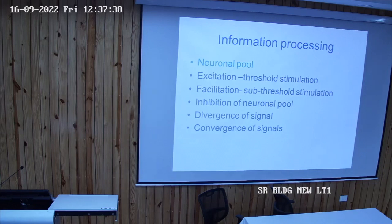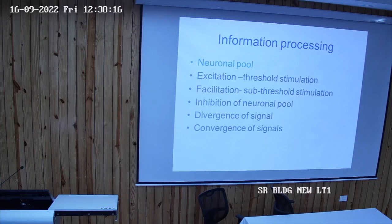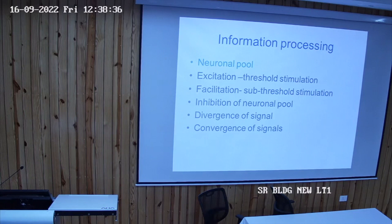Convergence is mainly seen in the motor pathway. To perform a motor action, motor commands come from the motor cortex; basal ganglia provides input to control tone and posture; the cerebellum controls rate, range, and force of contraction. So cortical inputs, basal ganglia inputs, and cerebellar inputs all converge upon the alpha motor neurons of the spinal cord. Information from the periphery — muscle spindle position sense — also reaches the alpha motor neuron. All information from different sources converges on this final common pathway. This is the typical example of the convergence phenomenon.